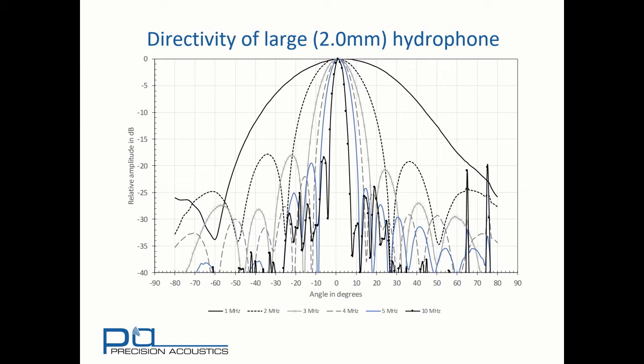Consider here a hydrophone active element that is large relative to the wavelengths it's being used to measure. Here we're looking at signals in the 1 to 10 MHz range. And we can see that even at 1 MHz, the lowest frequency of interest in this chart, there is a 10 dB fall off from normal incidence by the time we achieve plus or minus 40 degrees. Similarly, a signal that's 10 dB below the peak is achieved at 10 MHz by changing the angle of incidence by only plus or minus 3 degrees. A hydrophone of this size would be very sensitive to angular misalignment during experimentation.